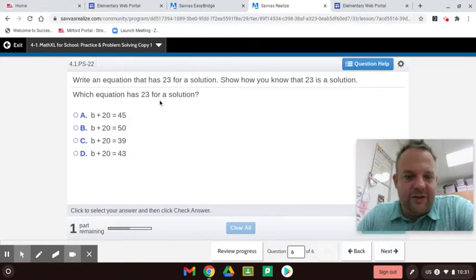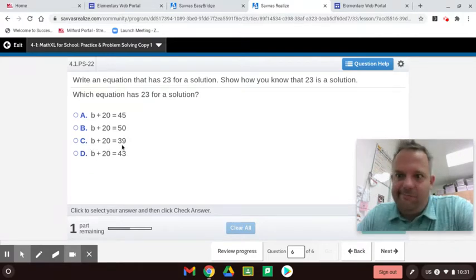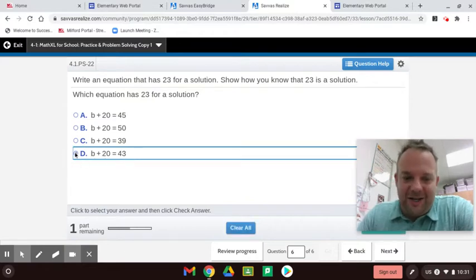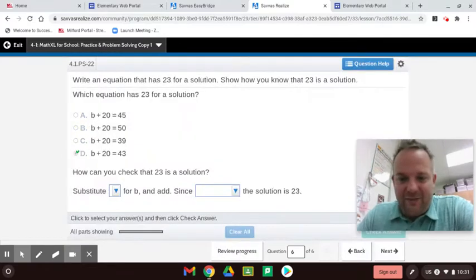Which equation has 23 for a solution? Let's see. 23 plus 20 equals 45. No. 23 plus 20 is 50. Nope, that would be 43. 23 plus 20 is 39. 23 plus 20 is 43. All right, so yeah, not so bad on this one.